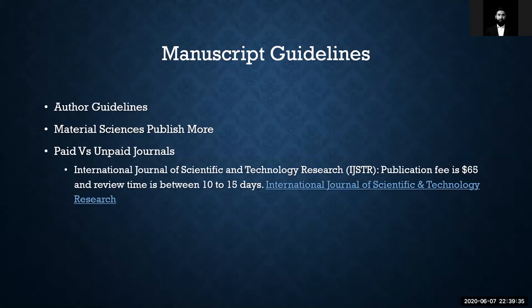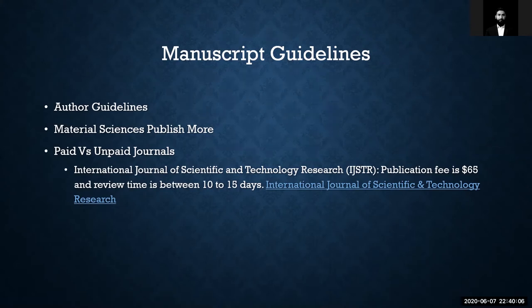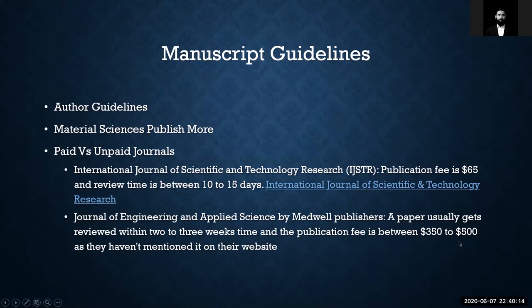Even paid journals can have good high impact factors, but it depends on the specific journal. Some journals are paid and you can get published fairly quickly in them if you absolutely have to. For example, the International Journal of Scientific and Technology Research has a publication fee of $65 and takes around 10 to 15 days for notification of acceptance or rejection. The Journal of Engineering and Applied Science by Manuel Publishers usually reviews within two to three weeks, with a publication fee of around $350 to $500.